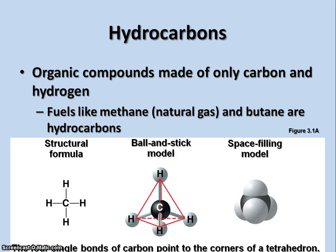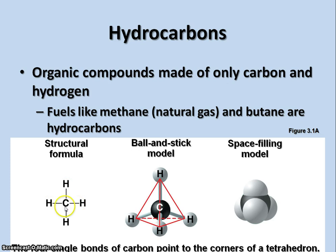Organic compounds that are made of only carbon and hydrogen are called hydrocarbons. These are fuels like methane or gasoline. We often illustrate these molecules in a couple of different ways. One way is by means of a structural formula. The structural formula shows us the central carbon atom, and each one of the lines stands for one covalent bond, or one shared pair of electrons between the carbon atom and the other atom present.